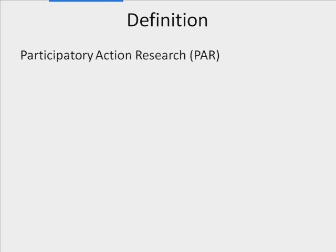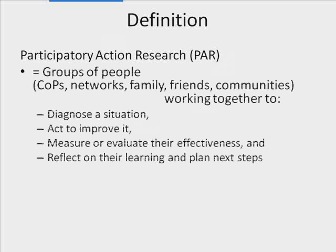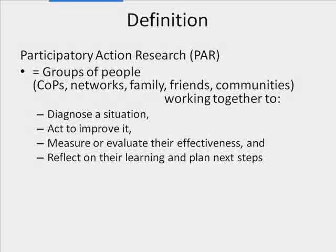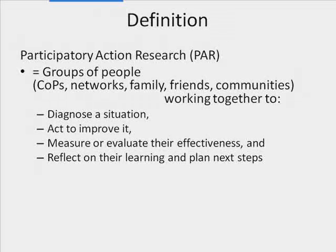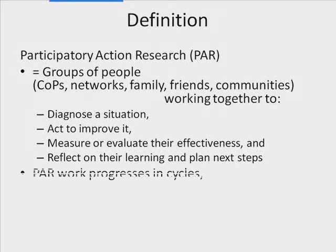A couple of definitions to get us started. PAR — Participatory Action Research — is a group of people, whether informal or formal networks, communities of practice, your family and friends, or people working together to get something done personally, professionally, or in your community. You do that in four stages: you diagnose a situation, you act to improve it, you measure the effectiveness of what you've done, and you reflect. It works in cycles, going on and on until even the most difficult things show improvement.